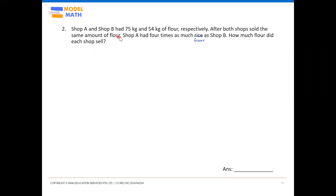For this question, notice that they gave us the actual values of each shop at first. The word 'respectively' means the first value goes to Shop A and the second belongs to Shop B. The actual masses are different, with no comparison statement provided at the start. At the end, we get the comparison word 'four times.'